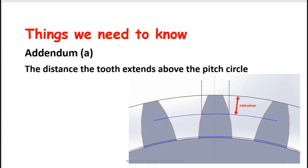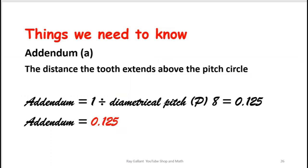Things we need to know: we need to know what the addendum is. The addendum is 1 divided by the diametrical pitch. In this case we're using 8 and therefore our addendum for this particular gear is going to be 0.125.